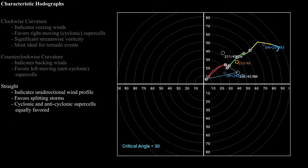There will be a link in the description with an animation illustrating the storm-spawning process — showing how you can get a cyclonically rotating thunderstorm and an anti-cyclonically rotating thunderstorm. You will typically see that in an environment where the hodograph is really straight in a unidirectional wind profile.